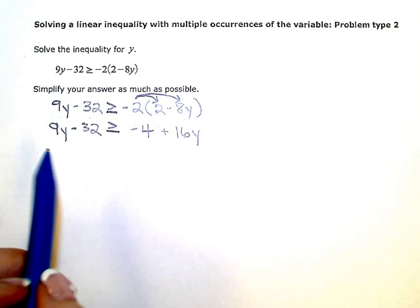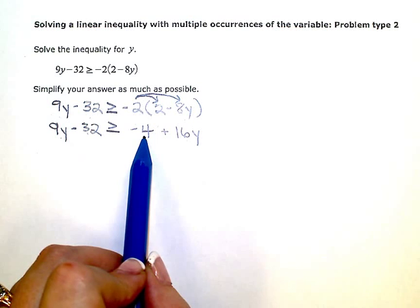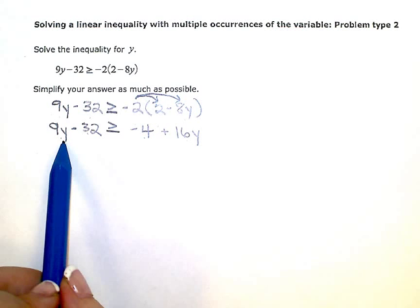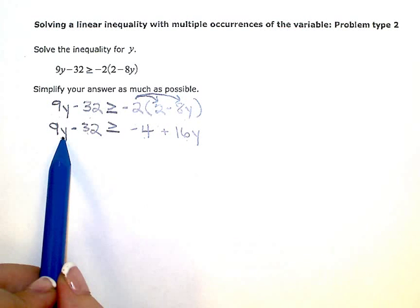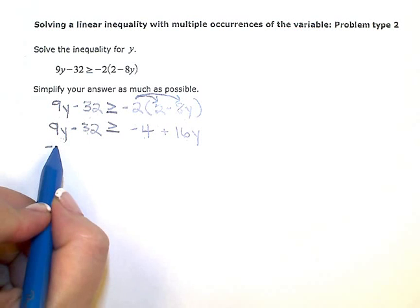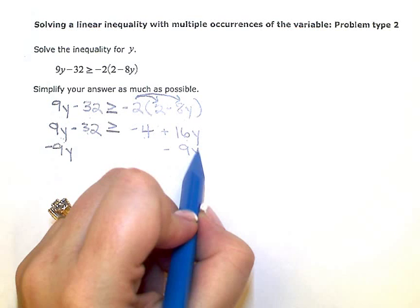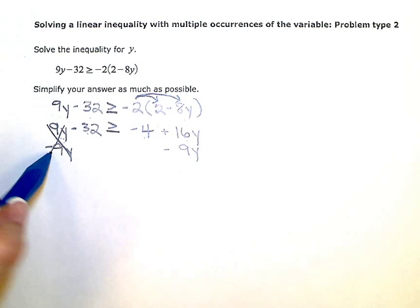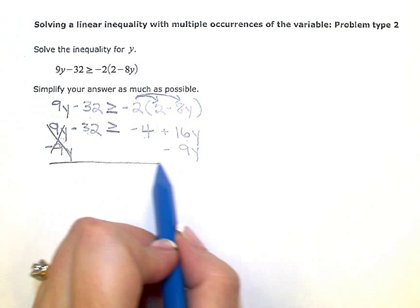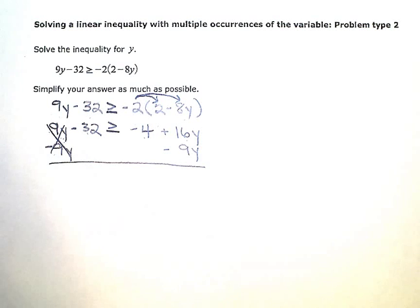Now I have both a variable term and a constant term on each side of my inequality. The first thing I need to do is zero out or eliminate one of the variable terms, so I'm just left with variables on one side of my inequality. I'm going to subtract the 9y from both sides to zero it out over here on the left. The only reason I chose to do the 9y instead of the 16y is just because 9 is smaller than 16.